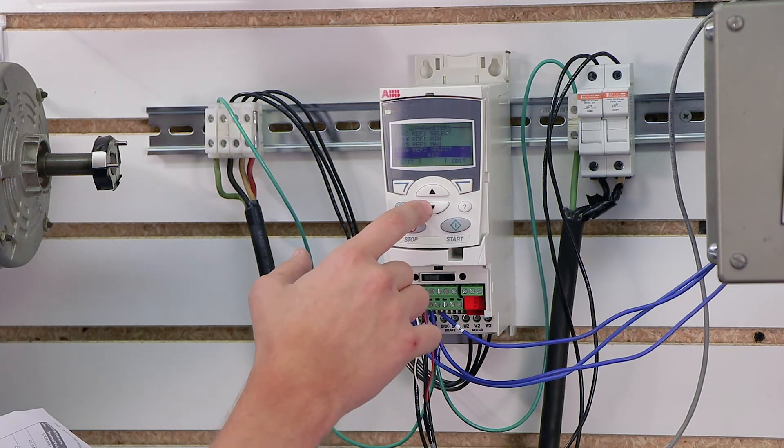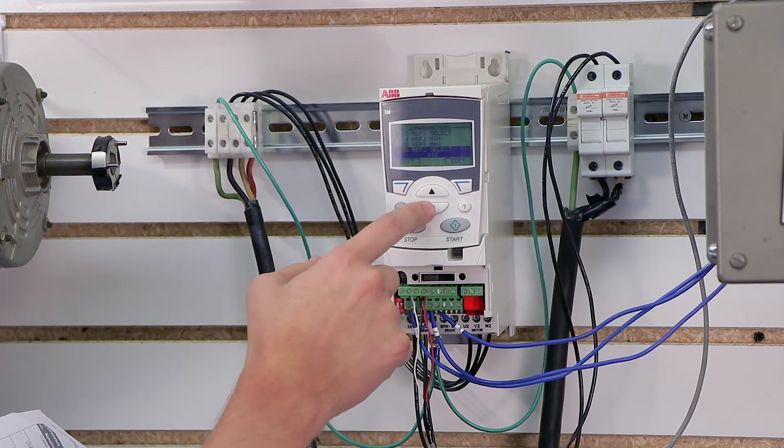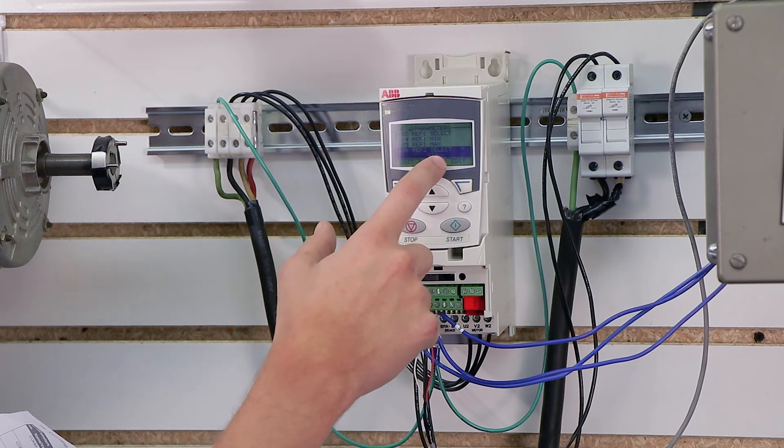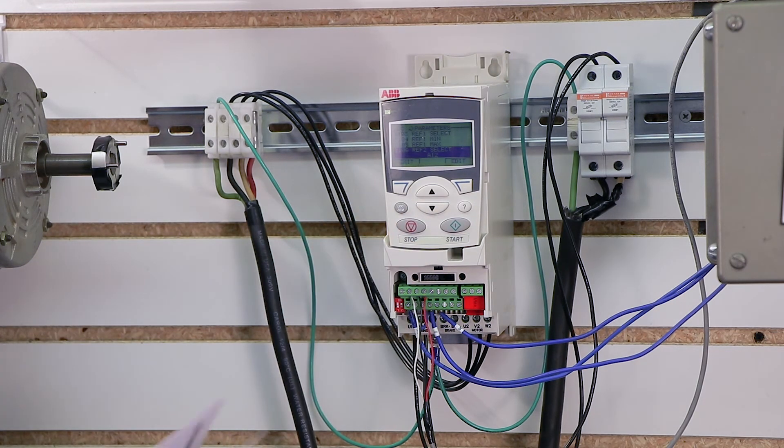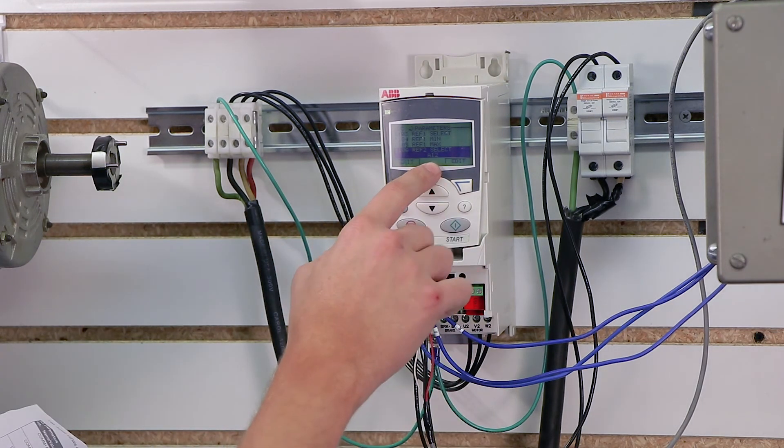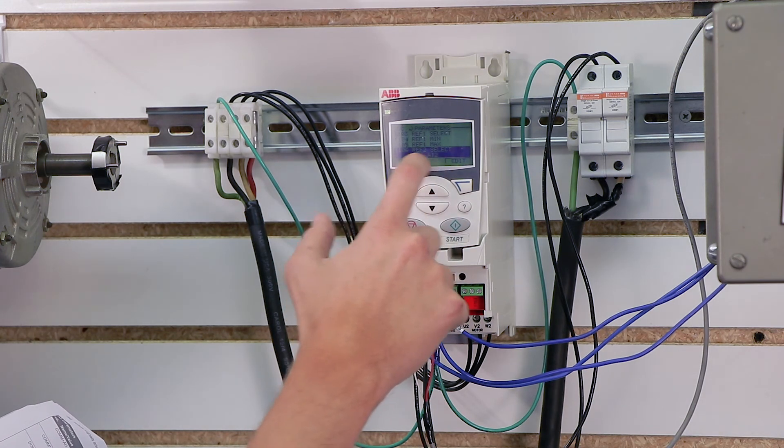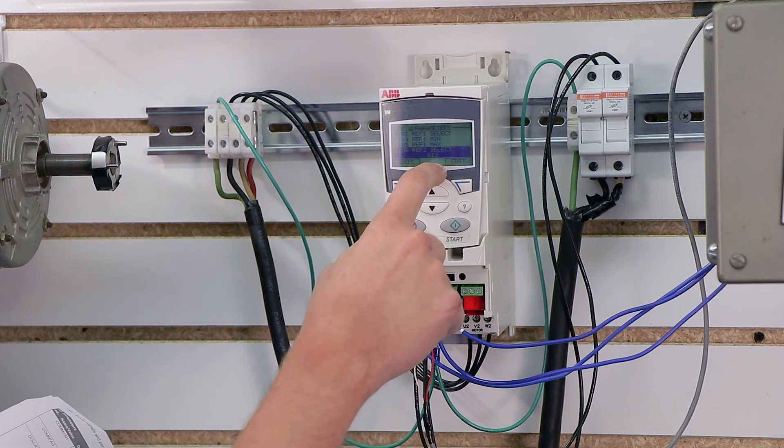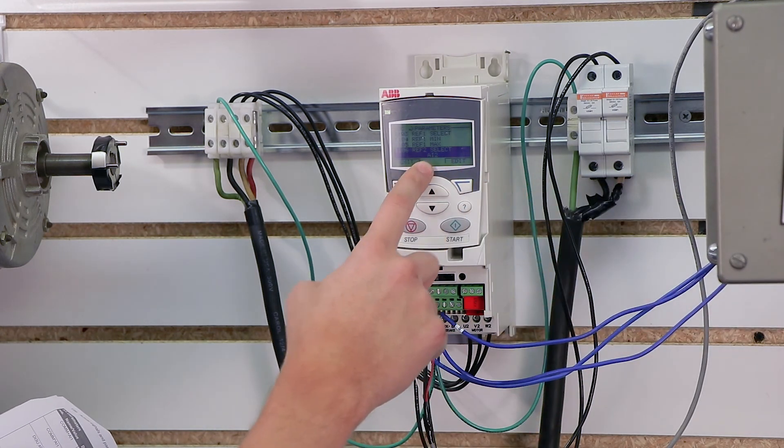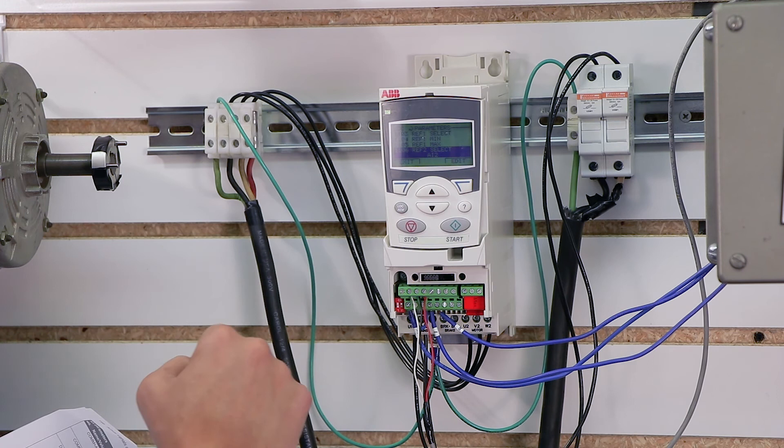If I scroll down here a little more I can get to reference 2 select. As I said earlier in this video there is actually a way to toggle between two different speed references. So if you need to be able to switch between a speed from a PLC and a speed from a speed pot you can do that. Reference 2 select lets you go in and actually select what you want your second speed reference to be.